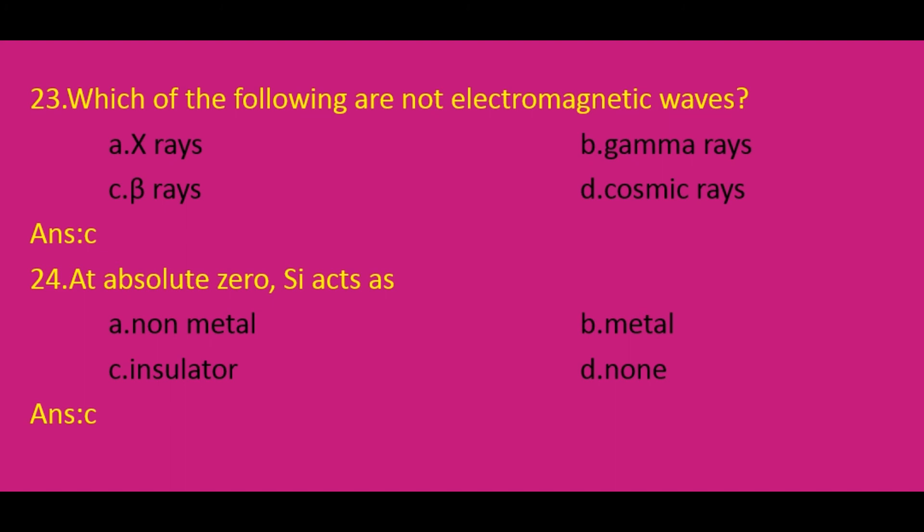At absolute zero, silicon acts as: silicon is a semiconductor material. At zero Kelvin or absolute zero, electrons do not have sufficient energy to jump from the valence band to the conduction band, and therefore silicon acts as an insulator. The correct answer is option C.